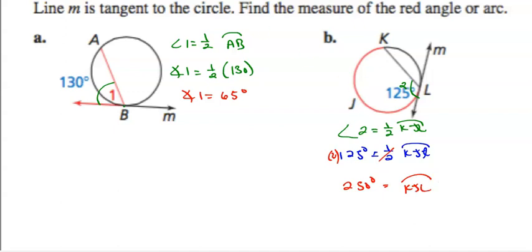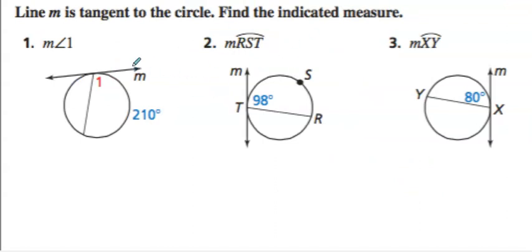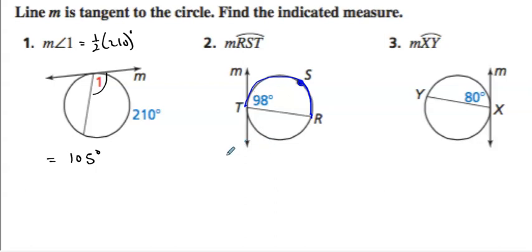Alright, hopefully simple enough. A couple practice problems. Angle one is going to equal one half of 210, so angle one equals 105 degrees. For the next one, we're given the angle and looking for arc RST. The arc is two times 98, which is 196. And lastly, arc XY: the angle is 80, so the arc must be 160 degrees, since 80 equals half of 160.